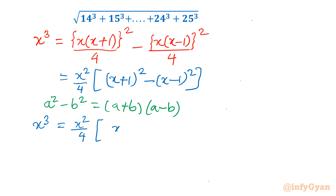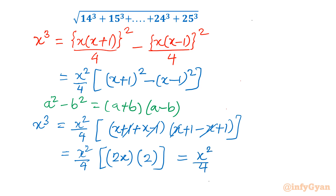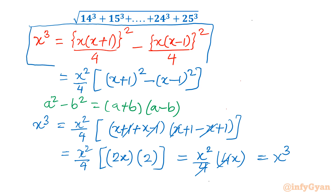I will apply the same (a+b)(a-b). So, (x+1) plus (x-1) times (x+1) minus (x-1). Simplifying: x cancels with x, leaving x² over 4 times 2x in the first bracket and 2 in the second bracket. Ultimately we get x² over 4 times 4x, which equals x³. This shows the relationship between the difference of squares and cubes — that is why this identity is very very useful.